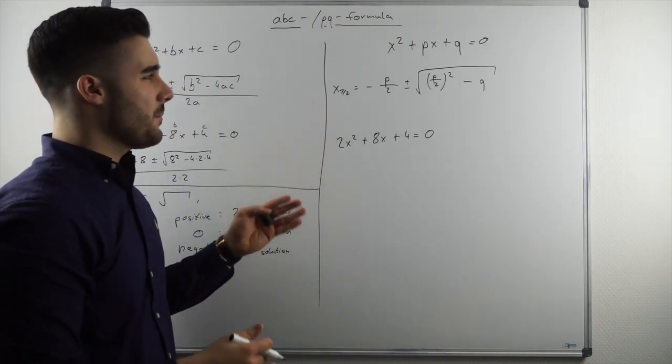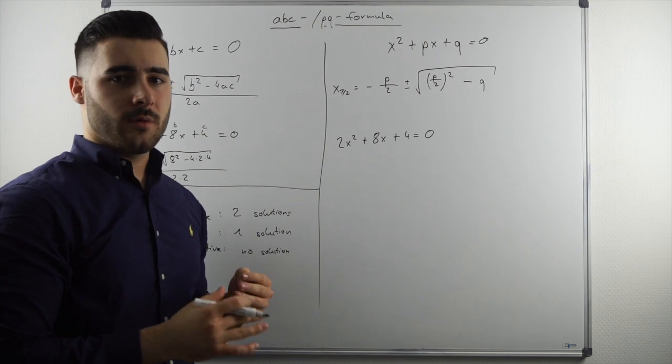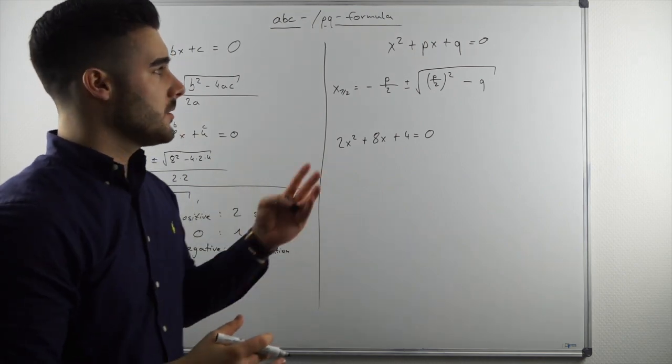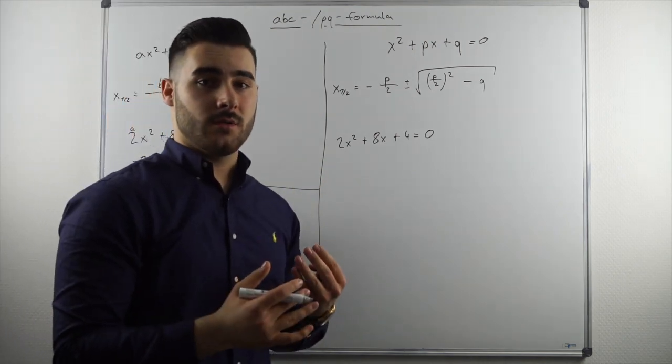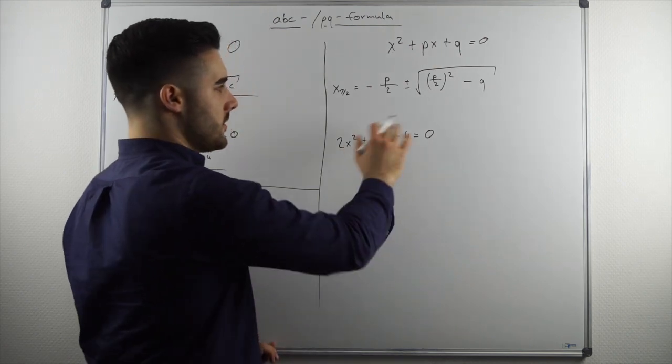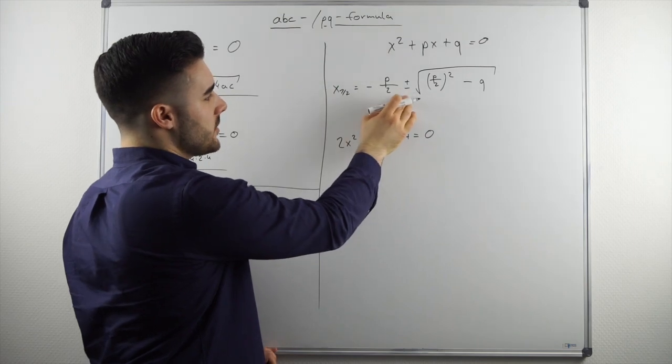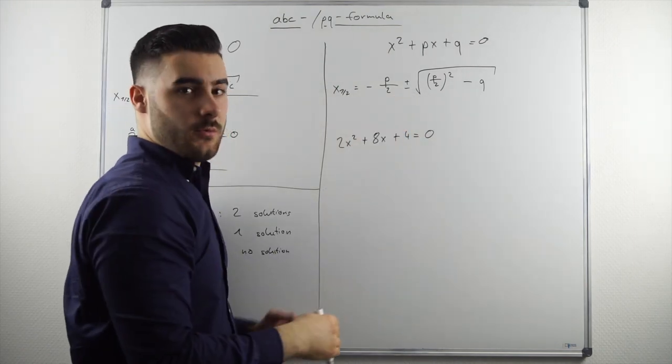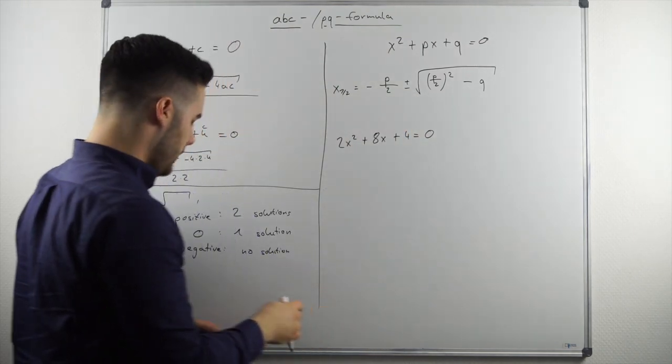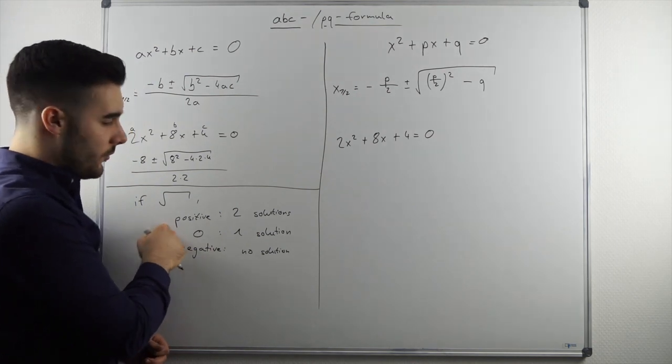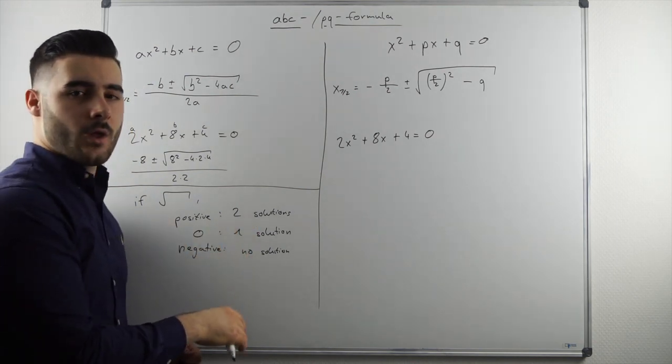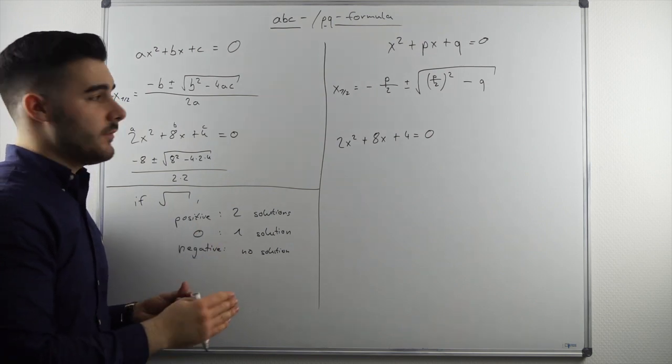And the PQ formula basically works pretty much the same as the ABC formula. So it's again plugging numbers into it. However, we are still going through it. So we have minus p half plus or minus again, because obviously we are also looking again for a positive root with two solutions. Although we cannot always achieve that depending on the numbers that we have.